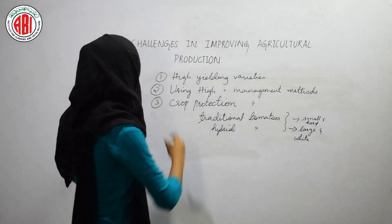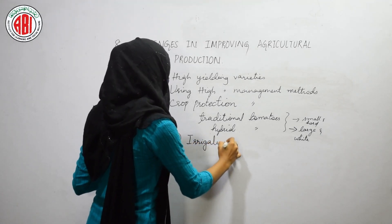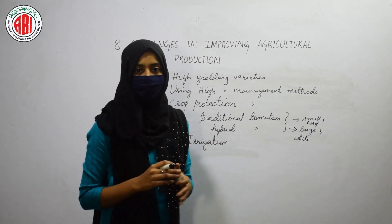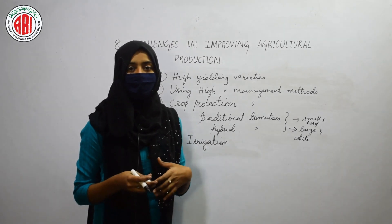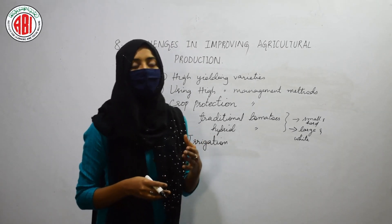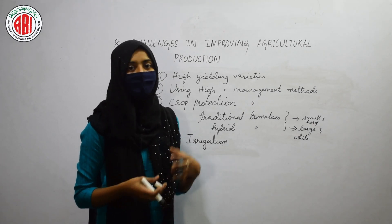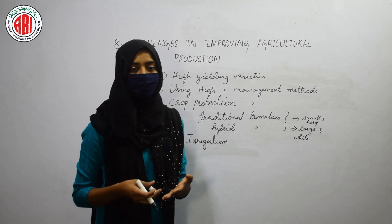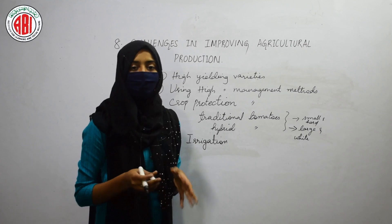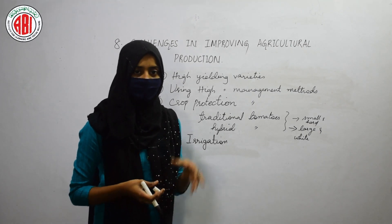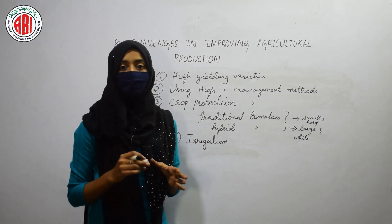The next method is using high yielding management methods. The first one is irrigation. Water is one of the most important factors in agriculture. Different landforms are present that are barren and dried up because of water problems. Up until now, groundwater was being used, but groundwater levels are decreasing because it is not being recharged properly — rainwater is not being allowed to seep down into the earth to recharge the groundwater. This leads to water scarcity, meaning water is not available in proper amounts for agriculture.